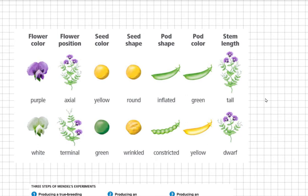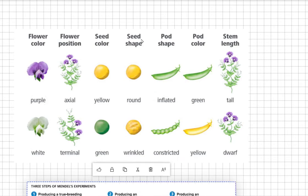In this presentation I'm going to explain how to analyze Mendel's first and second experiment. As you know, Mendel studied seven characteristics in pea plants: flower color, flower position, seed color, seed shape, pod shape, pod color, and stem length. For every characteristic, two traits existed — one dominant and one recessive.